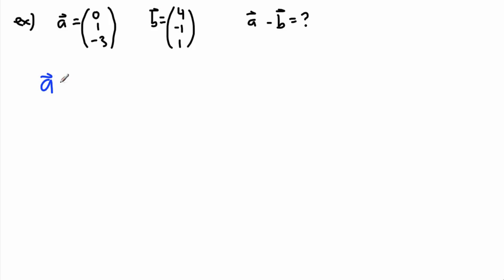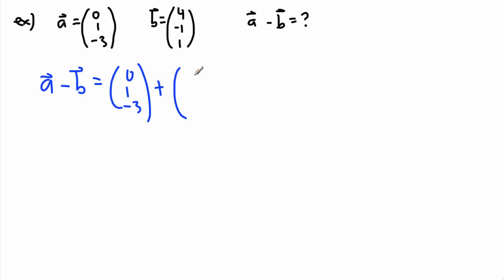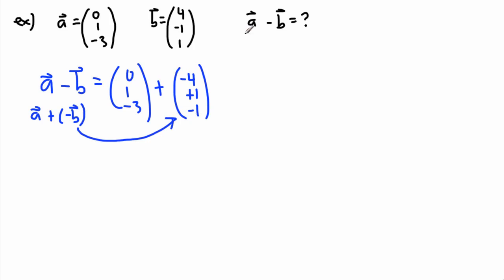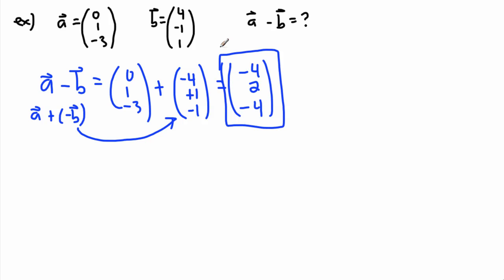So in this case, A minus B — how do I deal with that? That's going to be 0, 1, negative 3. I'll do it like this: plus, and I'll just change the sign of all of them, so it's negative 4, positive 1, and negative 1. I'm really saying A plus negative B. It's 0 plus negative 4, so 0 minus 4 is negative 4. 1 plus 1 is 2. And negative 3 plus negative 1 is negative 4. So it's actually surprisingly easy to do this mathematically.